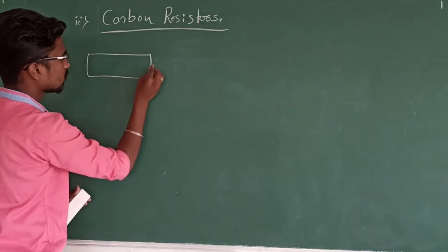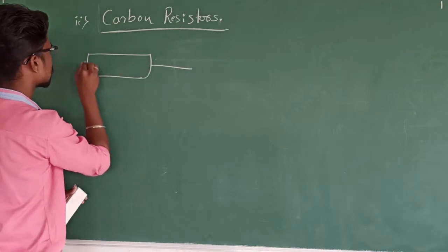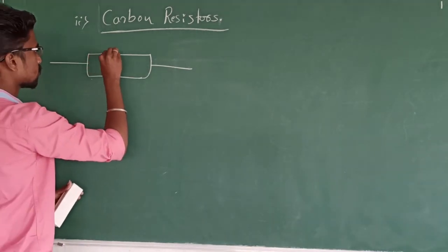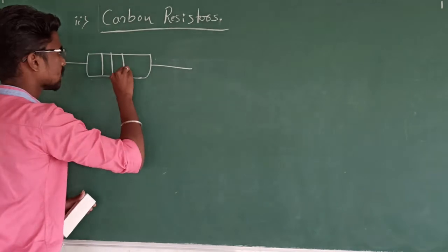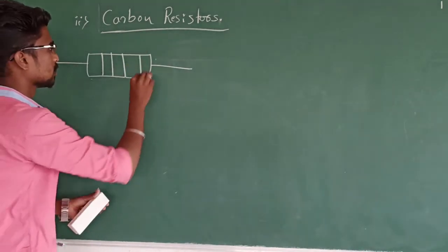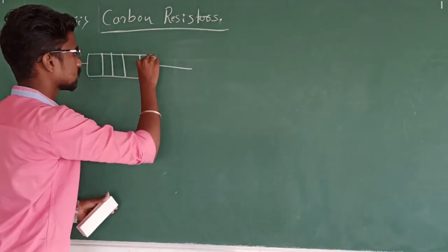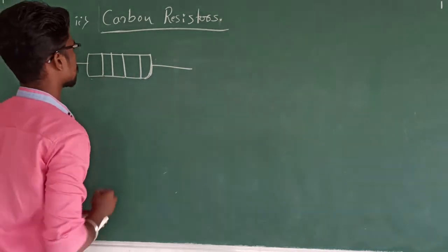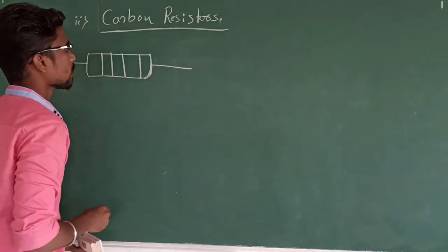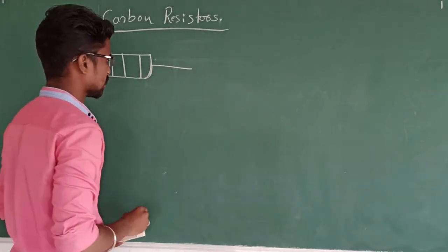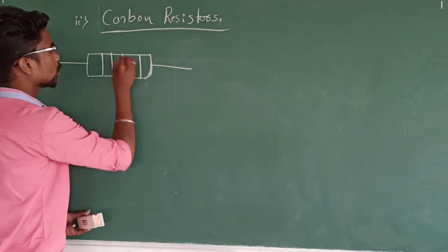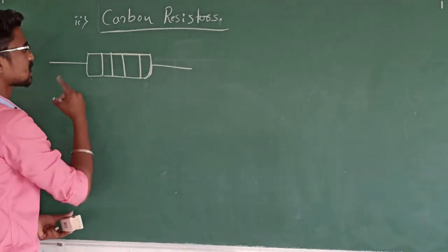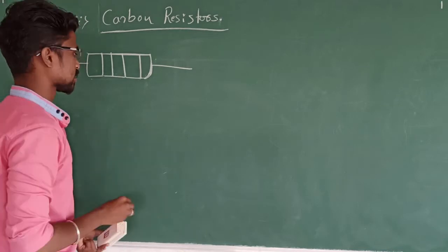Let me draw a small diagram. This is my first, second, third, and fourth band. So this is my resistor. I want to know the value of this resistor using color codes.